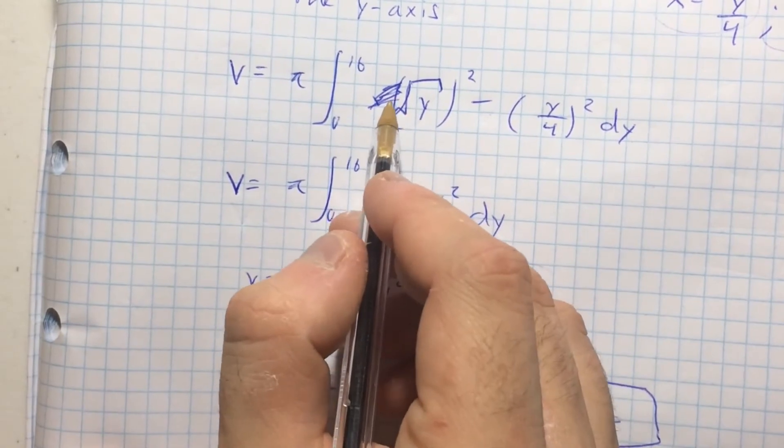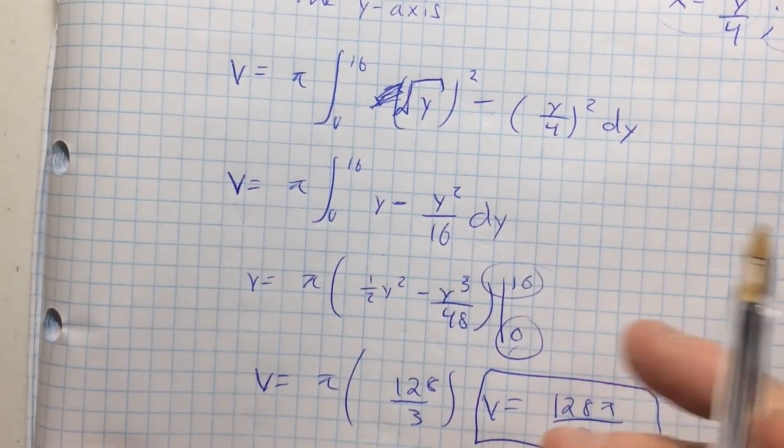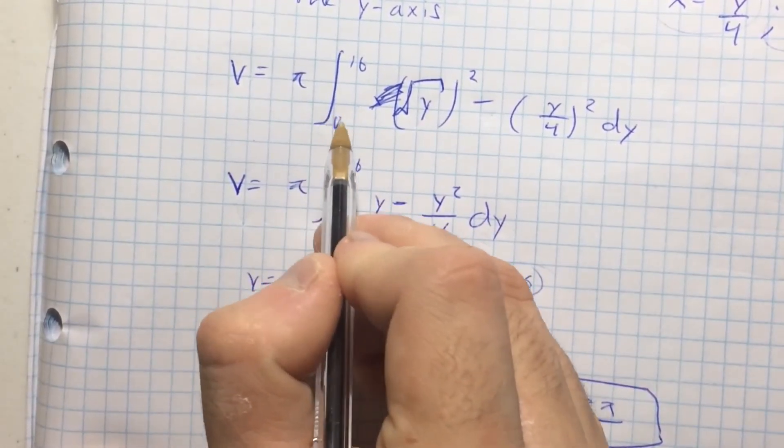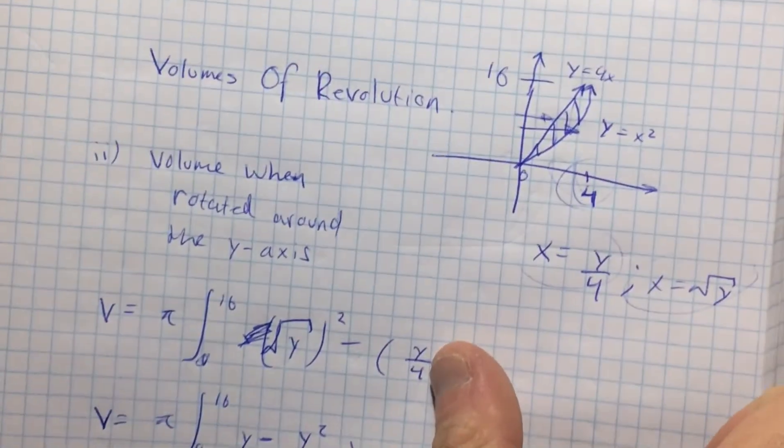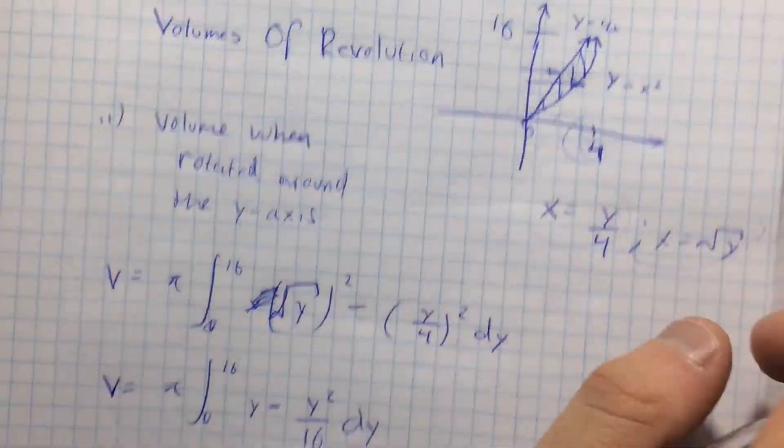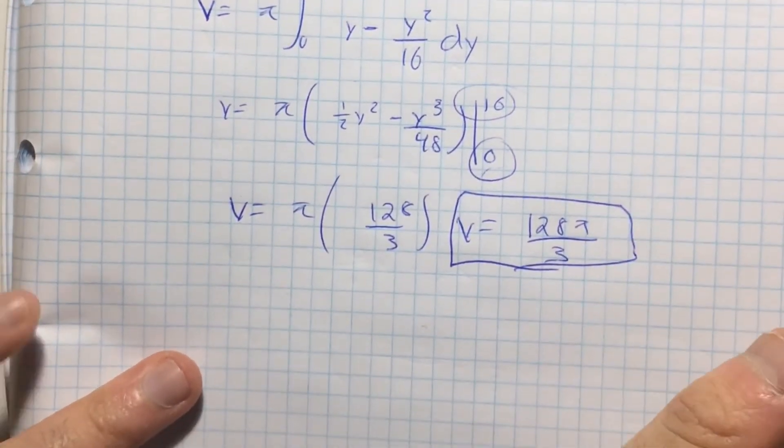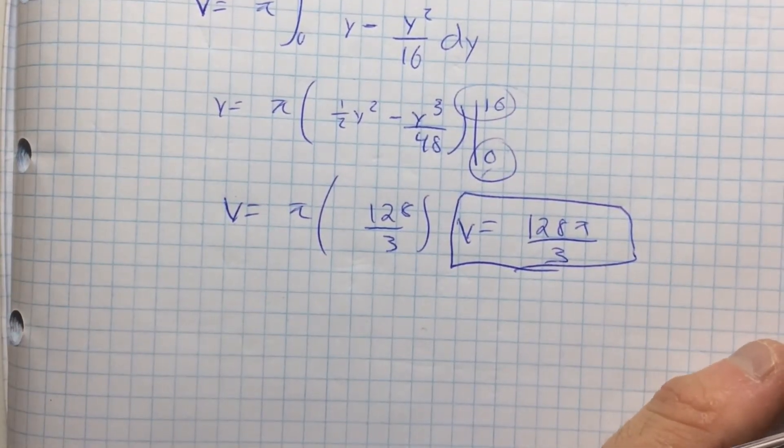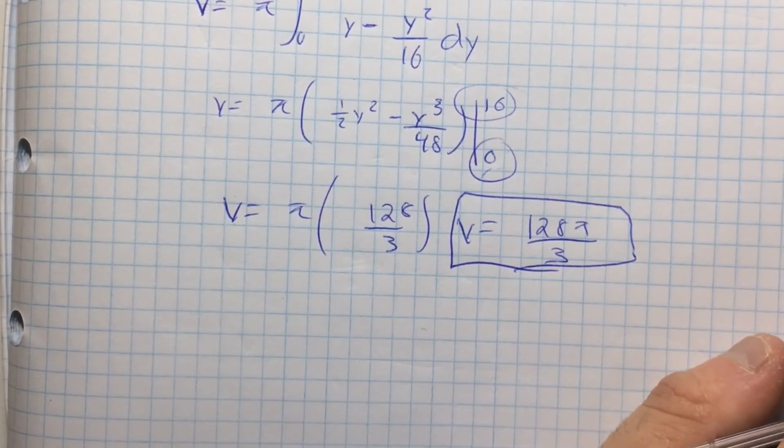I almost made the mistake of writing x squared dy, but that's wrong. Because if you've got boundary conditions from 0 to 16, that means you're integrating from the y axis, not the x axis. But that's the answer and that's how you do volumes of revolution, integrating with respect to y. Bye bye.